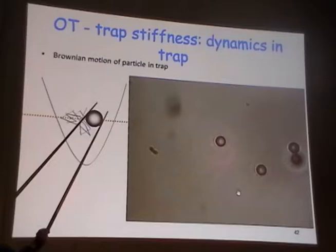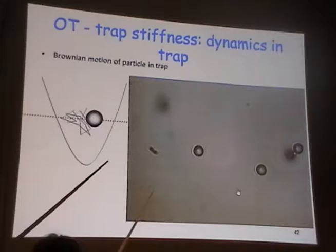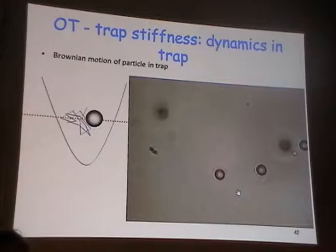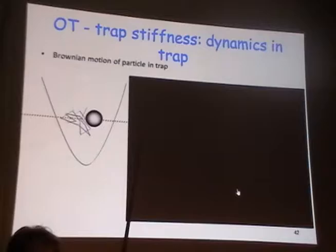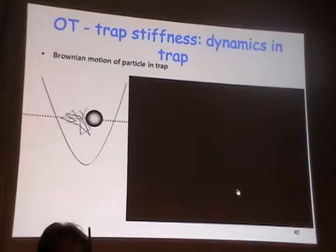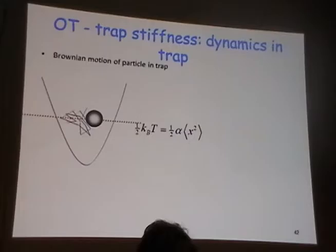I'm moving this potential around while I trap the particle, so the particle stays in the trap and I'm moving it in XY. I can also move it in Z because it's three-dimensionally trapped in this three-dimensional potential. However, I'm not doing it here because it would require refocusing the microscope, so it wouldn't look as nice — but believe me, it is three-dimensional.